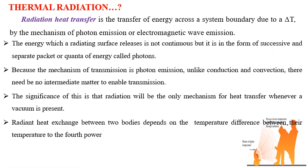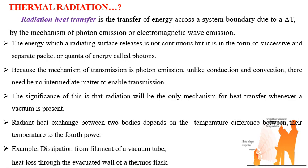Based on these theories we can understand the concept of thermal radiation. Examples include heat dissipation from the filament of a vacuum tube, heat loss through a vacuum tube, or heat loss through the evacuated wall of a thermos flask — these are the best examples of thermal radiation.